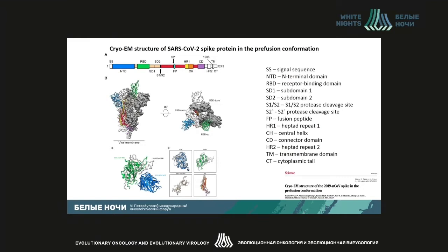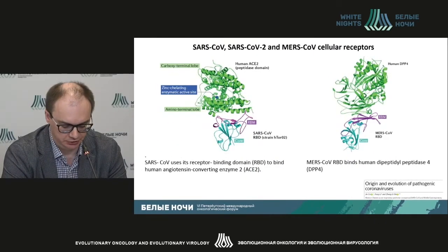SARS-CoV-2 contains a protein that composes a receptor binding domain and a final domain, which can be seen as key targets for medications against the virus. There is also a transmembrane site that carries this protein to the surface of the viral membrane. The first research on the spatial structure of the coronavirus protein appeared as early as January and February, and was compared with the proteins of the S protein of SARS. The spatial structure is quite conservative.